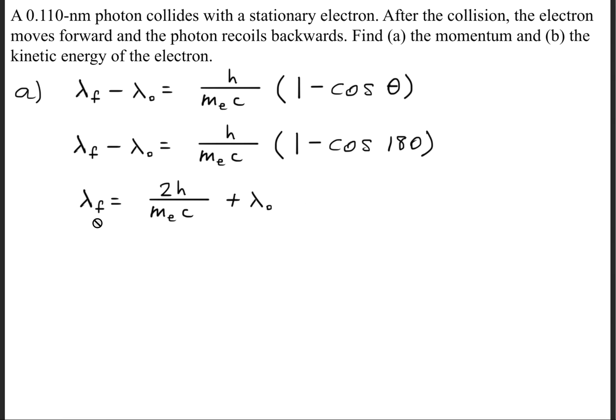And once again, we're trying to solve for the final wavelength. So if we reduce this expression right here, the cosine of 180 is negative 1. So 1 minus negative 1 is 2. So this is where we get the 2 right here.